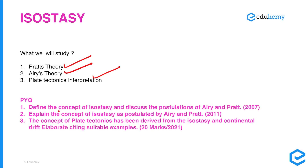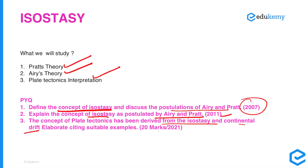Let us see some of the PYQs asked in previous years. One is: define the concept of isostasy and discuss the postulations of Airy and Pratt, asked in 2007. Second is: explain the concept of isostasy as postulated by Airy and Pratt, asked in 2011. Third: the concept of plate tectonics has been derived from isostasy and continental drift — elaborate citing suitable examples, asked in 2021.